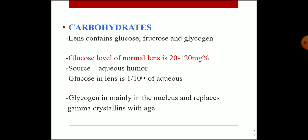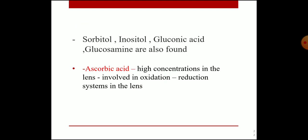Carbohydrates in the lens: the lens contains glucose, fructose, and glycogen. The glucose level is 20 to 120 mg%, and its main source is the aqueous humor; glucose in the lens is one-tenth of the aqueous humor. Glycogen is mainly in the nucleus and replaces gamma crystallin with age. Other carbohydrates include sorbitol, inositol, gluconic acid, and glucosamine. Ascorbic acid (vitamin C) is present in high concentration in the lens and is involved in the oxidation-reduction system.